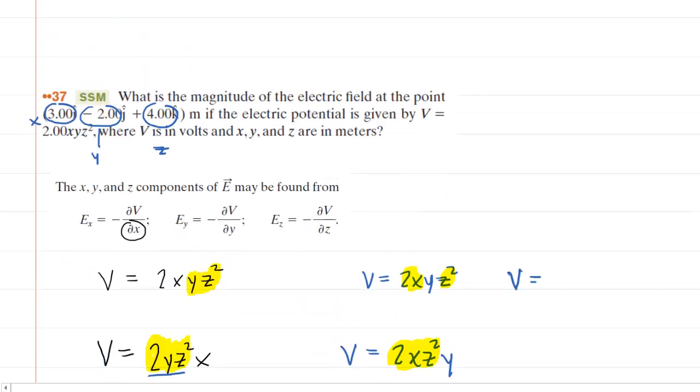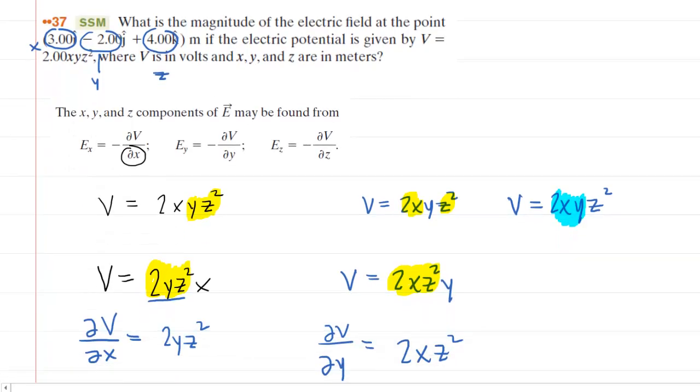We know the potential is 2xyz squared. Since we're doing this with respect to z, all of this is a constant. Now be careful here because the z is now z squared. So when you do the partial derivative of the potential with respect to z, you have to use the power rule.